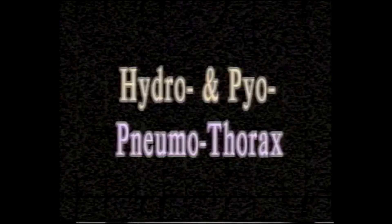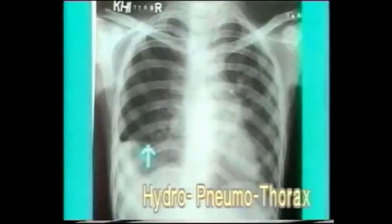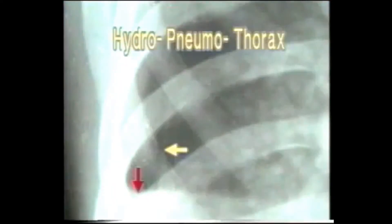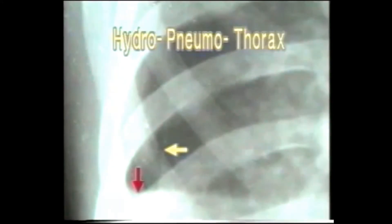When the pleural cavity contains both fluid and air, the condition is termed hydropneumothorax — if the fluid is clear — or pyopneumothorax if the fluid is pus. This X-ray shows a horizontal fluid level in the right hemithorax touching the chest wall laterally. The red arrow shows the horizontal fluid level and the yellow arrow shows the border of the collapsed lung, seen parallel to the chest wall and separated from it by a radiolucent band.